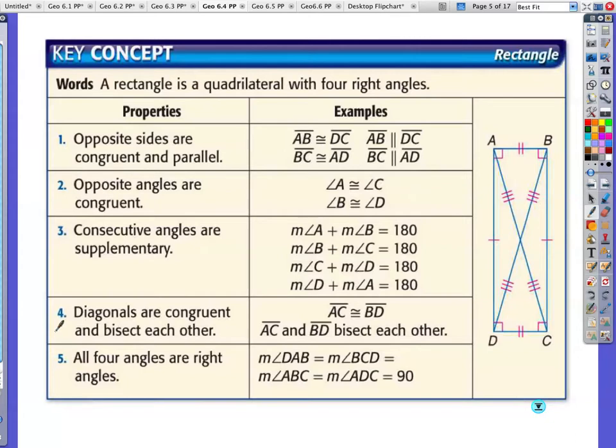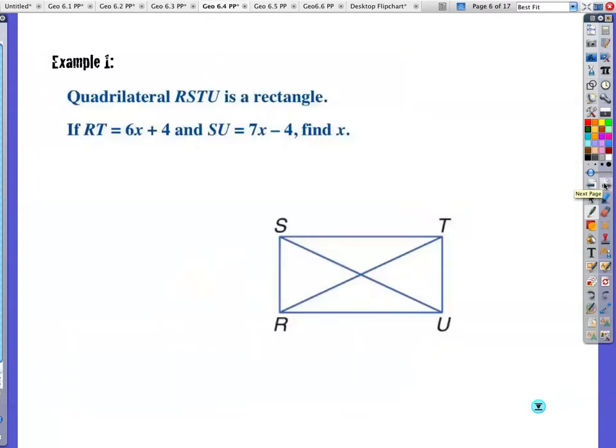Diagonals are congruent and bisect each other. This is something that you already have written down for the previous screen. Bisect each other is still true from the parallelogram. It's the part where the diagonals are congruent is due to rectangles. And all four angles are right angles. And that's kind of the one you learned way back in like fourth and fifth grade when you're being introduced to rectangles. So these two, make sure you've got those written down. Actually, we're going to put together a little study help guide for this because it's a lot of information.